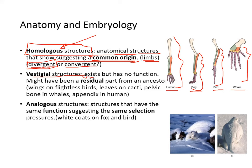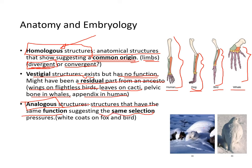Vestigial structures exist but appear to have zero function — they may be residual parts of ancestors, like wings on a flightless bird, leaves on a cactus, pelvic bones on whales, and the appendix in humans. Analogous structures have the same function, suggesting the same selection pressure. A white coat on an arctic fox versus white coloring on a bird — is this convergent or divergent? This is convergent evolution; they're converging to the same function.